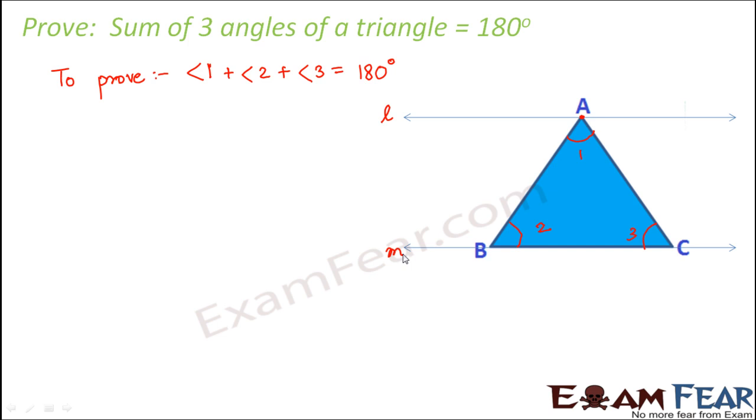We observe a few more additional angles. The moment we have drawn these lines, we have this angle—let us call this angle 4. Let us call this angle as angle 5. As per our construction, we have constructed l and m such that l is parallel to m.